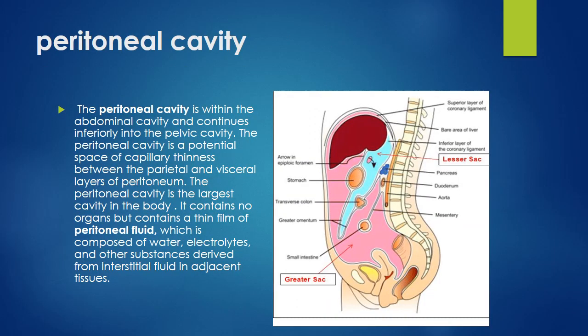Now, what is the peritoneal cavity? The peritoneal cavity is a potential space of capillary thinness between the parietal and visceral layers of peritoneum. This peritoneal cavity lies within the abdominal cavity and it continues inferiorly into the pelvic cavity. The peritoneal cavity is the largest cavity in the body, but please remember it contains no organs. When we say some organ is intraperitoneal it does not mean that the organ is present in the peritoneal cavity — the organ is said to be intraperitoneal when it is completely surrounded by peritoneum. So the peritoneal cavity is a potential space between the parietal and visceral peritoneums.